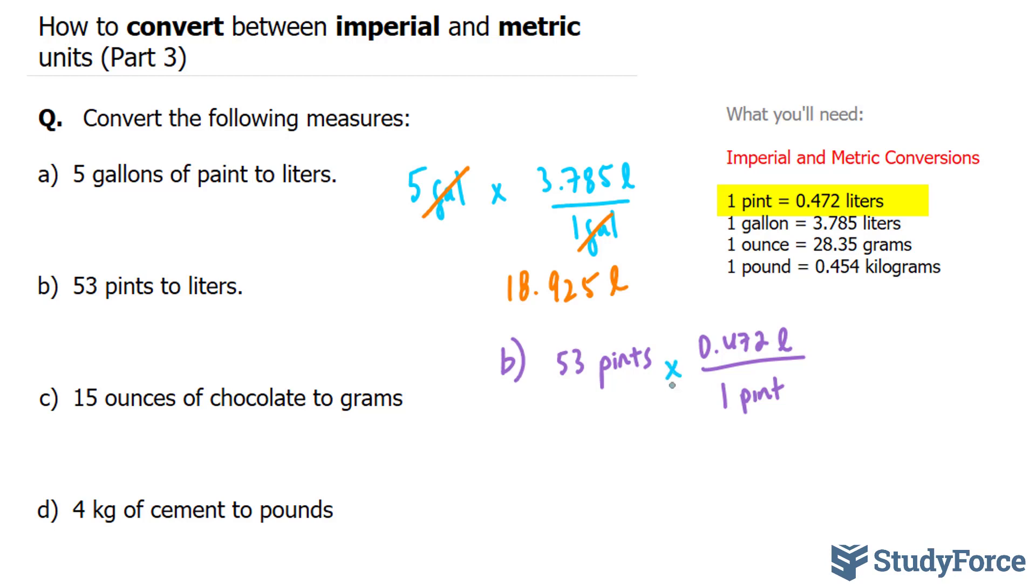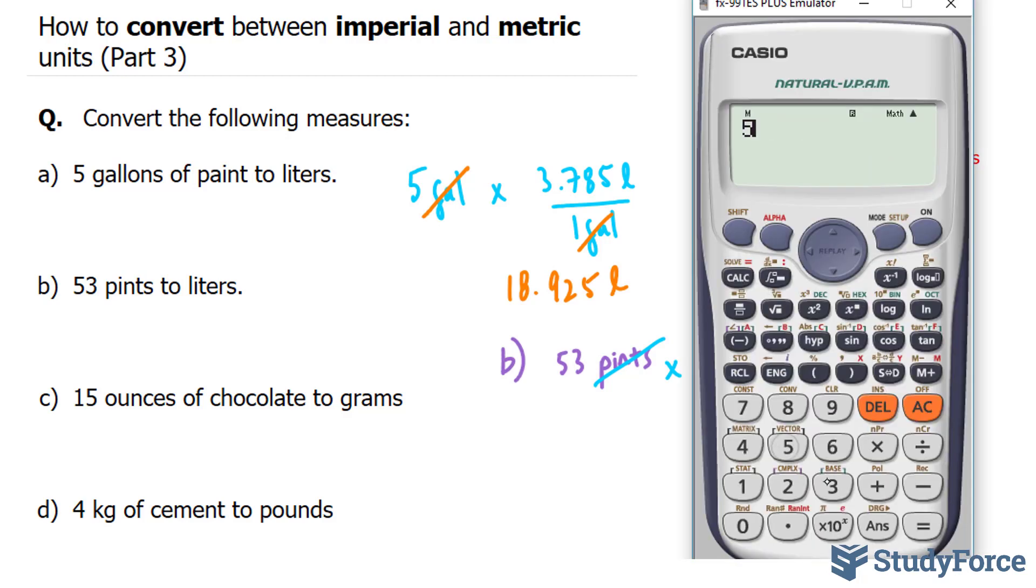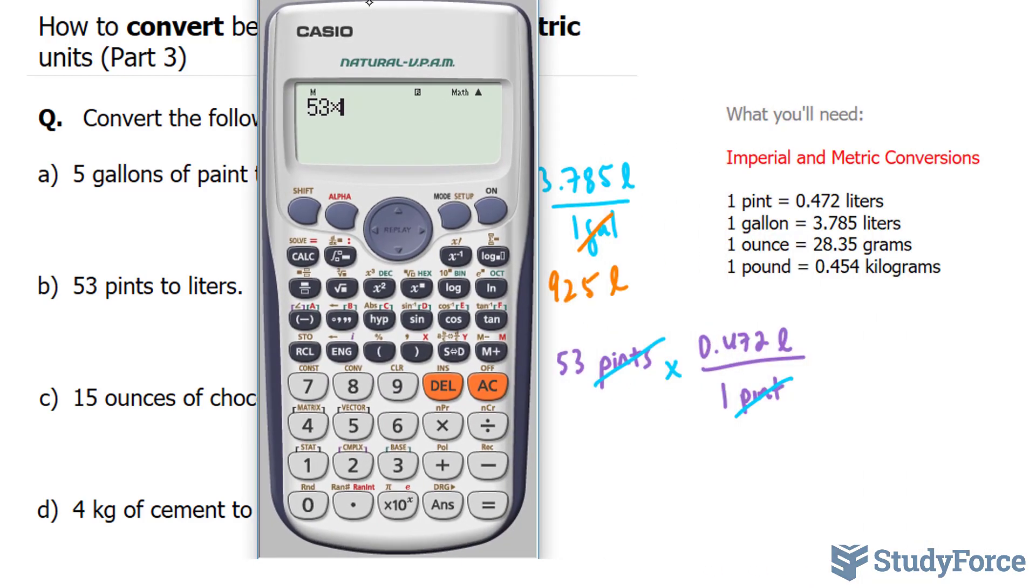So multiplying this out, the pints will cancel and you're left with, well, let's use our calculator, 53 times 0.472 gives me approximately 25 liters.